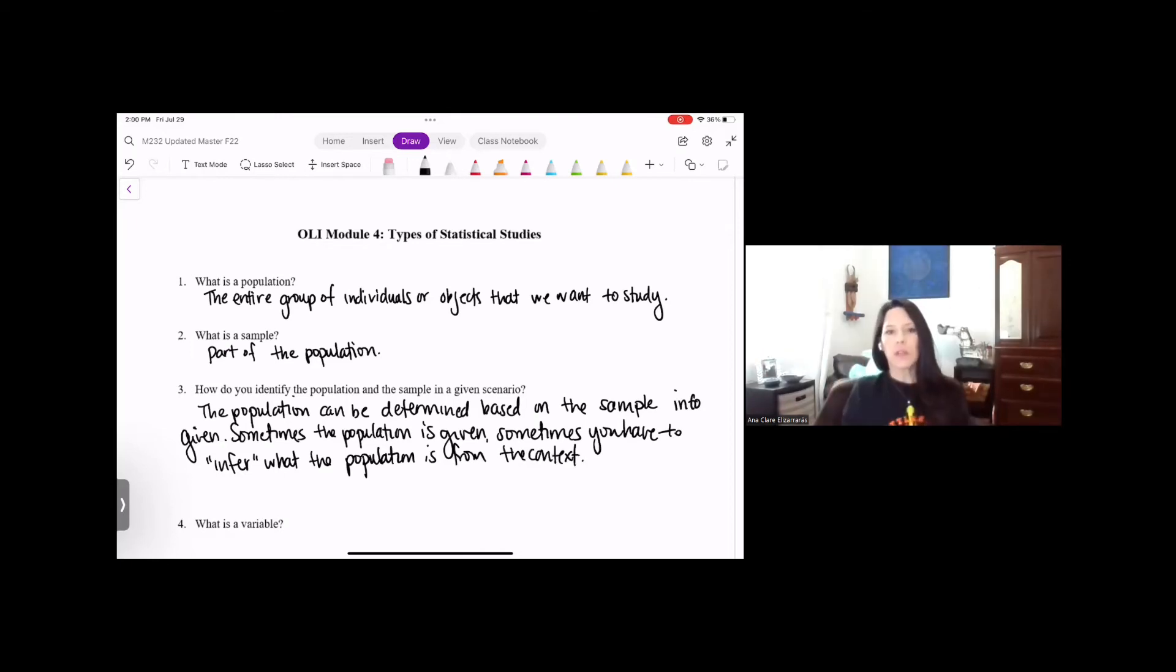I use this word infer, which is like inference. An inference is something that we perform in statistics. It's a large part of what statistics is about. We're taking information from a sample and we are inferring to the greater population. That's what we do. We gather information so that we can use it to reference the entire population or to make conclusions about the population.